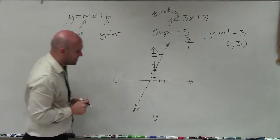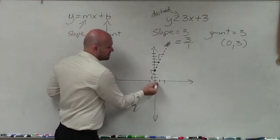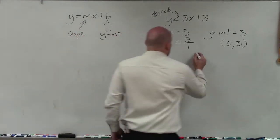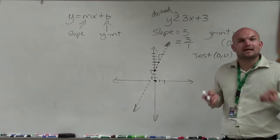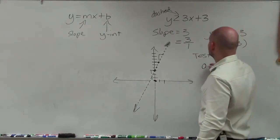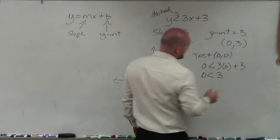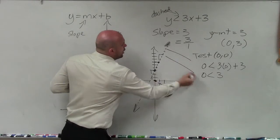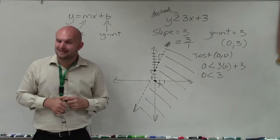Now I have this dashed line as my boundary line. I need to determine: am I going to shade above or below my boundary line? To do that, we test a point — the best point to test is (0, 0). I plug 0 in for x and 0 in for y, and identify if the inequality is true. Simplifying: 0 is less than 3 — yes, that's true. Since one point below my line is true, all points below my line are going to be true. And there you go, ladies and gentlemen — that is how you graph an inequality. Thanks.